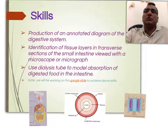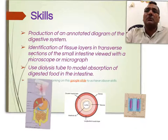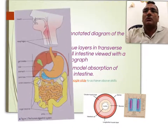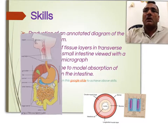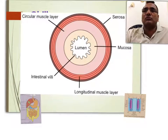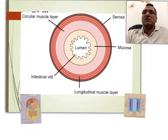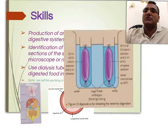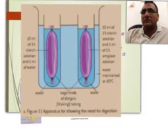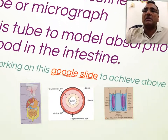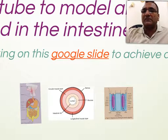Studying this unit, we will be learning these three skills. Number one, to produce an annotated diagram of the whole digestive system; to identify different layers of tissues on the transverse section of the small intestine; and to model the process of digestion by using dialysis tubing. We will be working collaboratively on these three skills on this Google Slide.